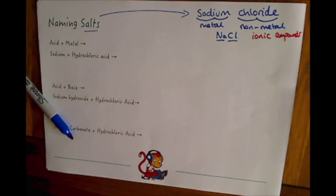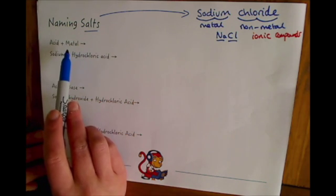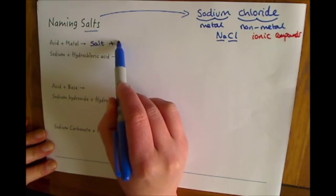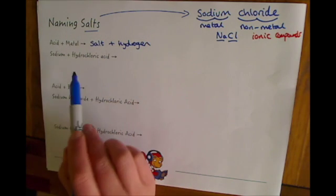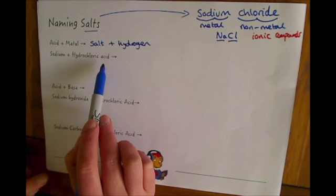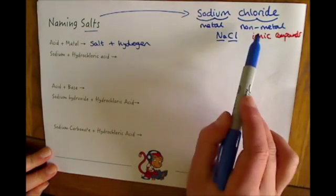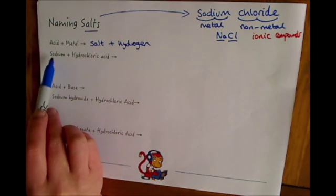So all of these salts are ionic compounds whereby you've got a positively charged metal ion and a negatively charged non-metal ion bonding together. Let's move on then to how salts are made. The first one is simply if you react an acid and a metal together you make a salt and hydrogen.